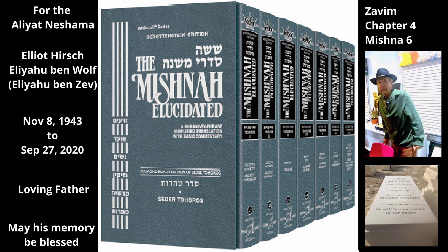Having mentioned the stringency that applies to a Zav but not to a corpse — i.e. that a Zav can transmit Tumah on a scale while a corpse cannot — the Mishnah further contrasts the laws of a Zav with the laws of a corpse. There are stringencies that apply to a Zav over a corpse, and there are stringencies that apply to a corpse over a Zav.